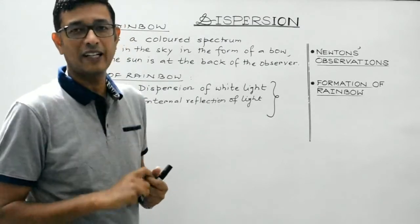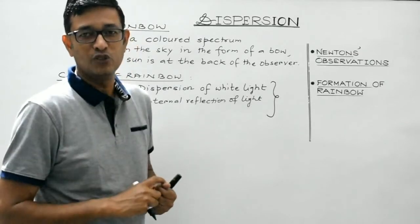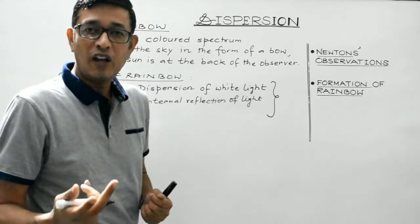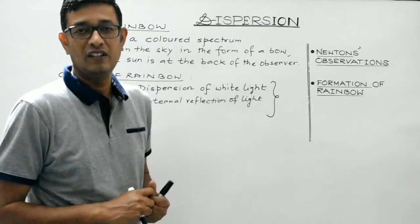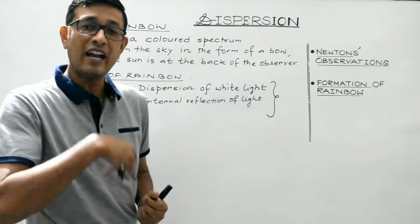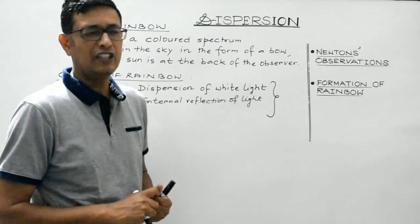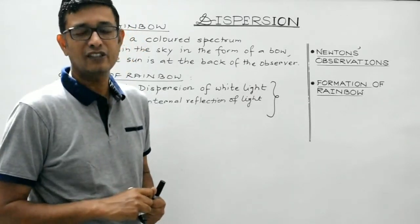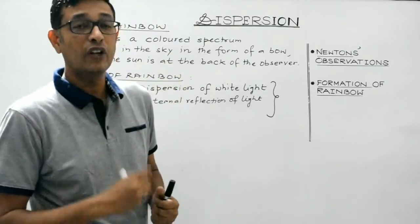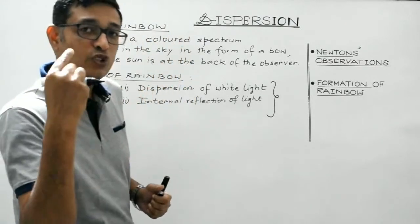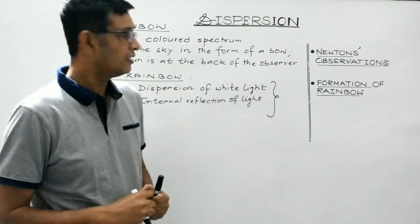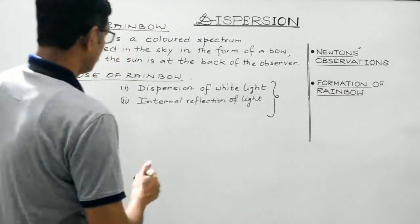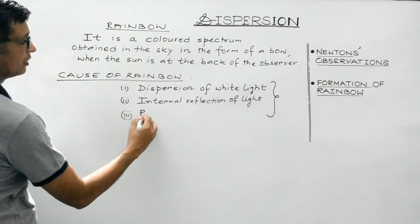Light may get internally reflected once, twice, thrice or four times inside the droplet. Accordingly, there are actually four types of rainbows: primary rainbows, secondary rainbows — which are very often seen — and tertiary as well as quaternary rainbows, involving three and four internal reflections respectively. Tertiary and quaternary rainbows are very rare to see as they form around the sun. In this lecture we will discuss only primary and secondary. The third cause is refraction of light.